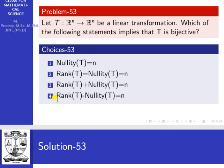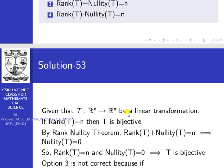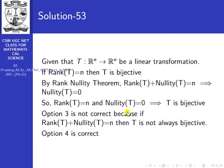The fourth option is the only correct option. When you take rank of T equal to n minus 1, the nullity of T cannot be negative. So for the fourth option, only rank of T equal to n and nullity of T equal to 0 is possible. Option 3 is not correct because rank of T plus nullity of T equal to n does not always imply T is bijective. Option 4 is the correct one.